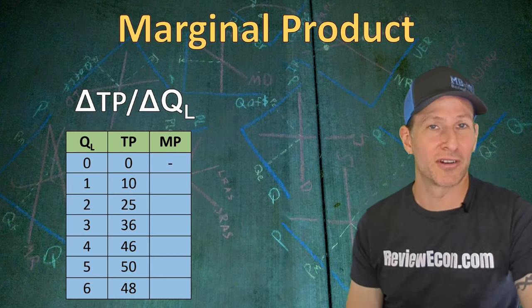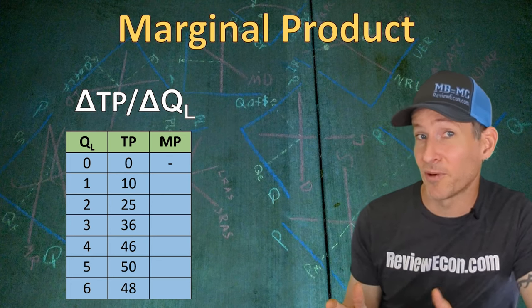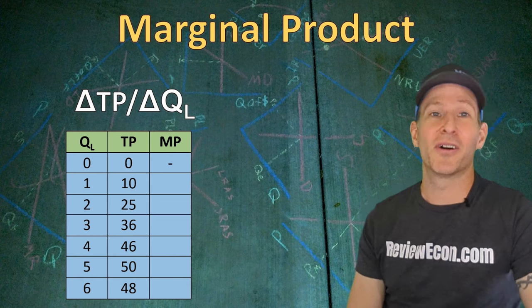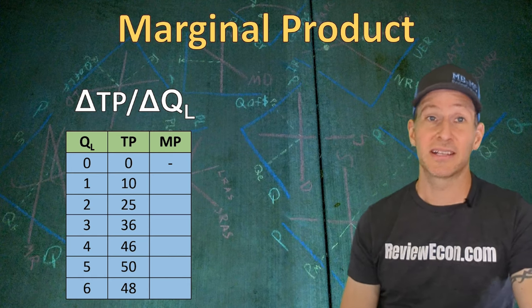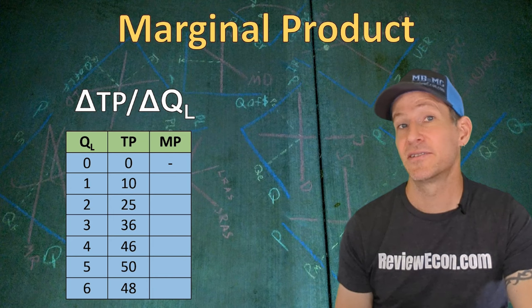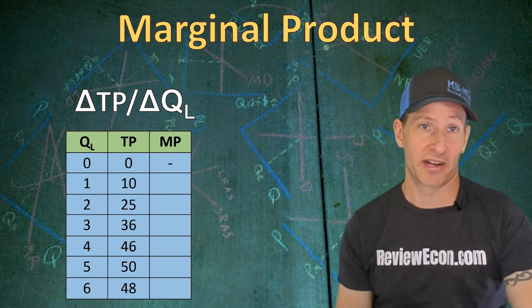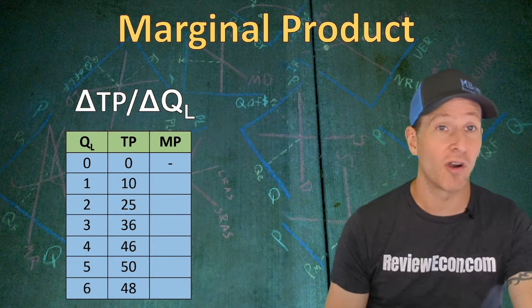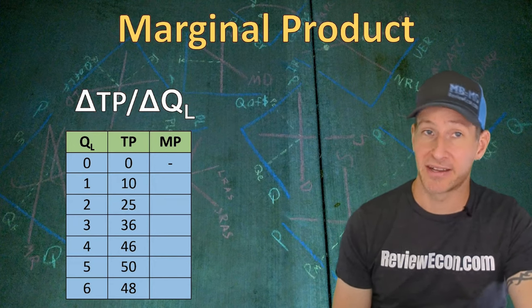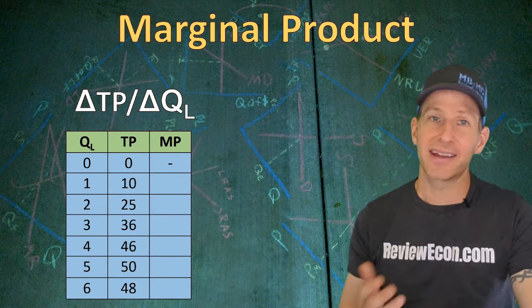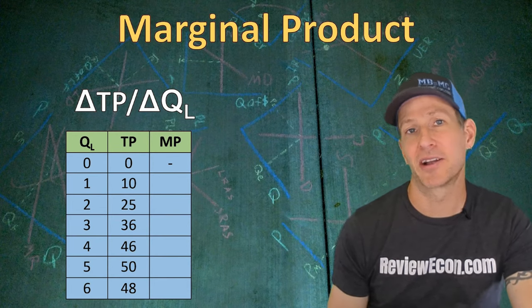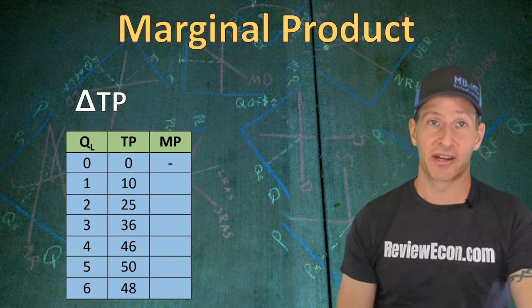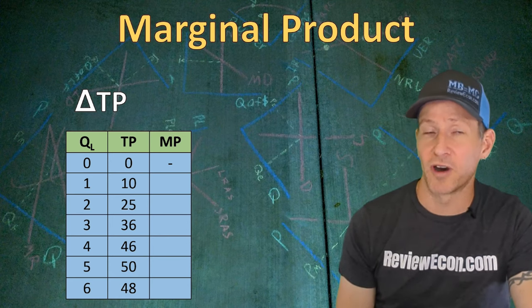In microeconomics, totals are important and show up on tests, but marginals are more important. So we're going to look at marginal product. Marginal product is the change in total product divided by the change in the quantity of labor. On this table, the change in quantity of labor is always one — we're just looking at the impact of hiring one more worker, which is most often the case on the AP microeconomics exam. So most of the time you won't have to divide by the change in quantity of labor because it will just be one.